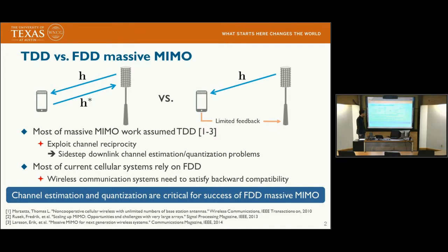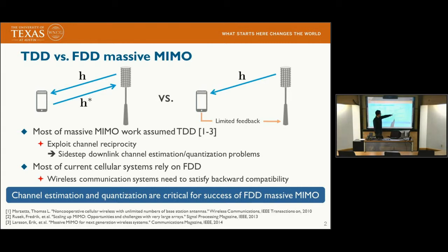However, most current cellular systems today rely on frequency-division duplexing, FDD, and wireless communication systems need to satisfy backward compatibility. So we believe that Massive MIMO should support not just TDD but also FDD, at least in their early stages. In FDD, the user learns the downlink channel through the downlink pilot, quantizes it, and feeds back the quantized channel to the base station. It is therefore crucial to develop efficient channel estimation and quantization algorithms to deploy FDD Massive MIMO.